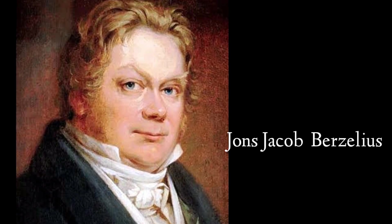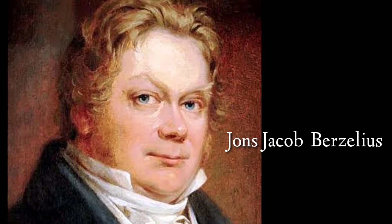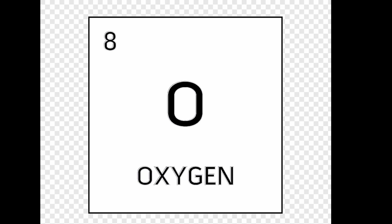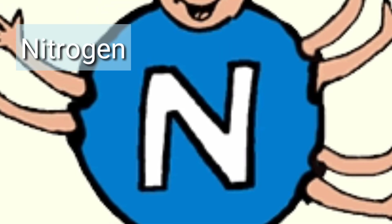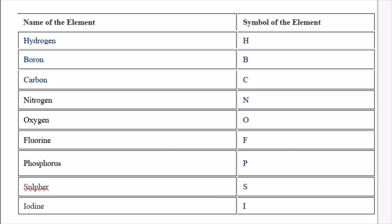Next we have the great scientist John Jacob Berzelius, who first decided that elements would be denoted by their first letter. You can see that carbon, which is C-A-R-B-O-N, has the first letter C, so the symbol is written as C. Hydrogen is capital H, oxygen is capital O. Remember that when the symbol is written using the first letter, it should always be in capital. Here is a list of a few elements whose symbol is given as the first letter of their name.